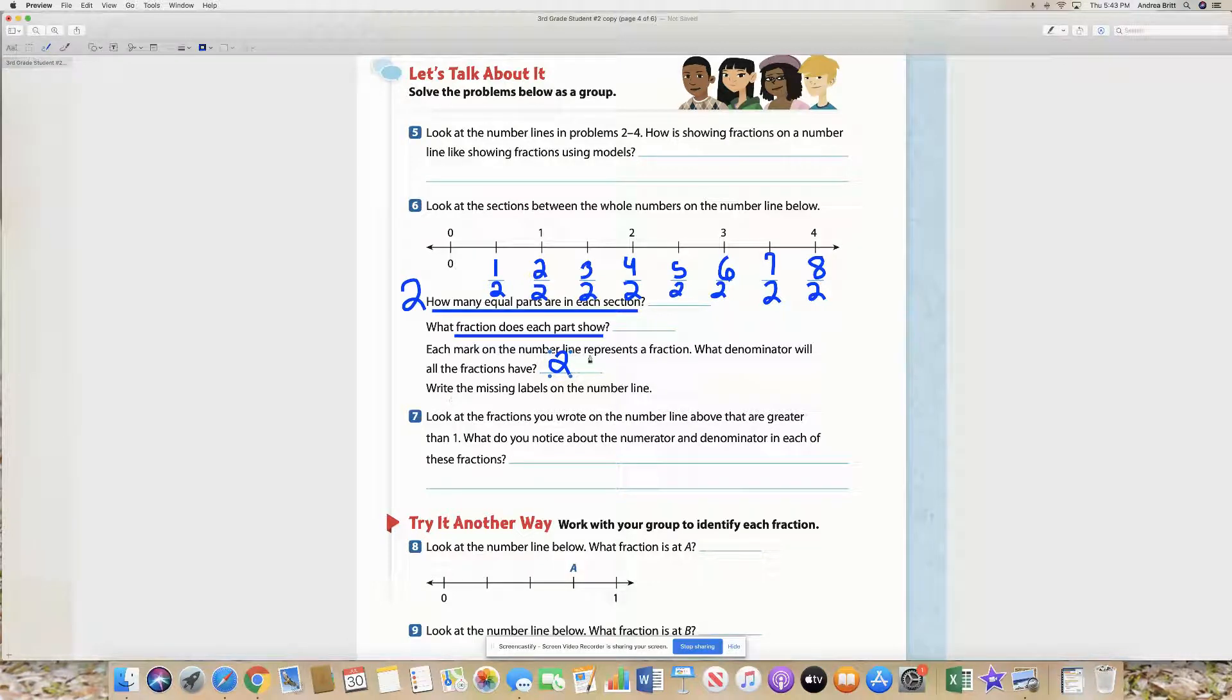All right, so all of the fractions on the number line are going to have a denominator of two, and then we wrote all of the missing labels.